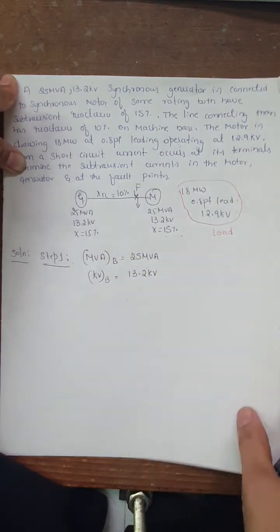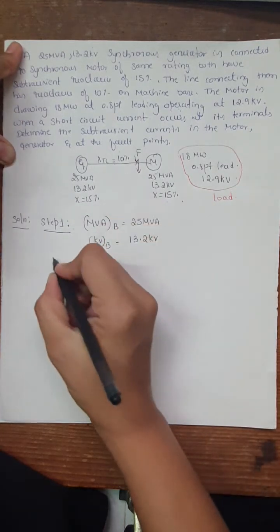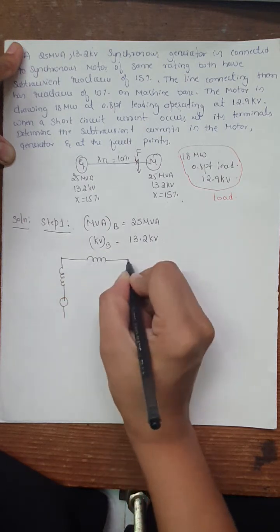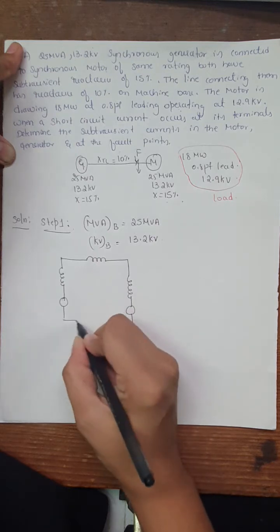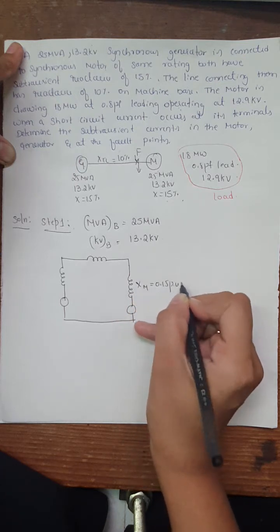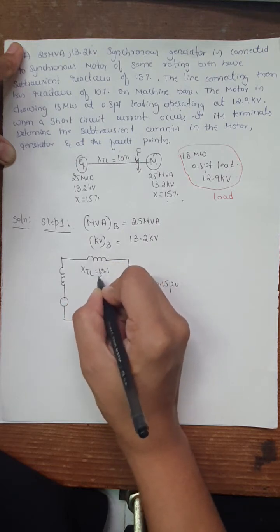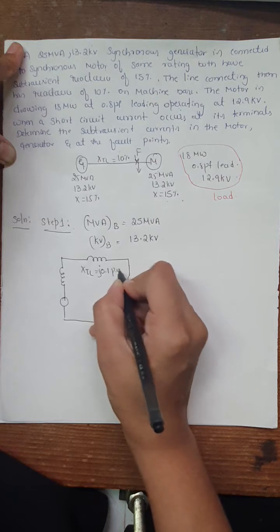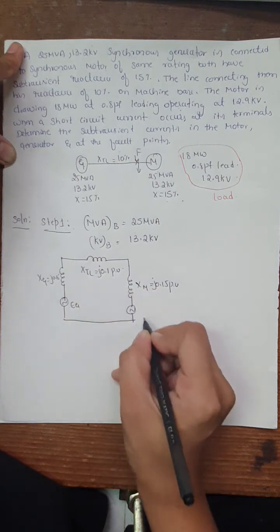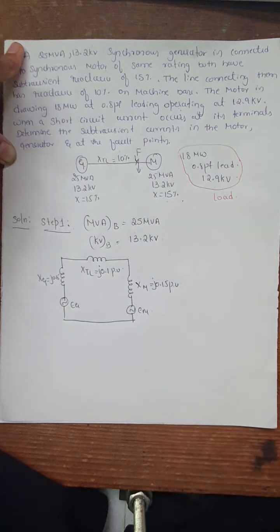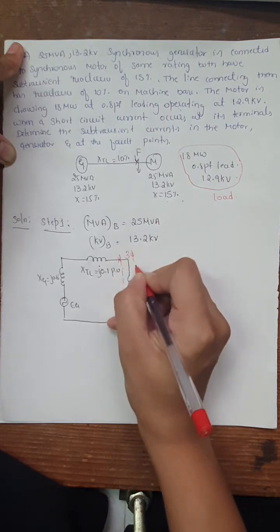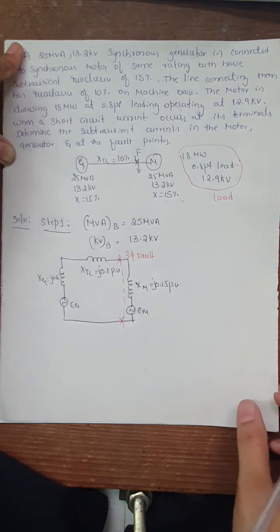Now I'll draw the per-unit reactance diagram for the given single line diagram. There is one generator connected to a transmission line, then we have a motor. The reactance of the generator is j0.15 per-unit, the transmission line is j0.1 per-unit, and the motor reactance X_M is j0.15 per-unit. This is the generator source voltage, this is the motor source voltage, and here we represent the occurrence of the three-phase fault at this particular point. This completes Step 1.